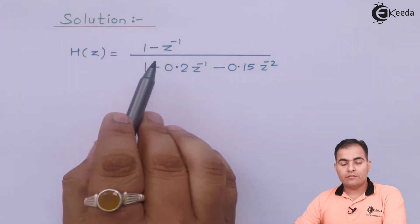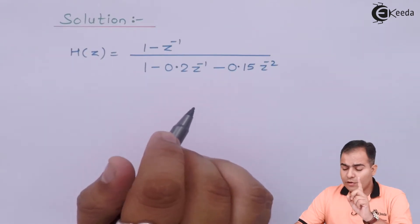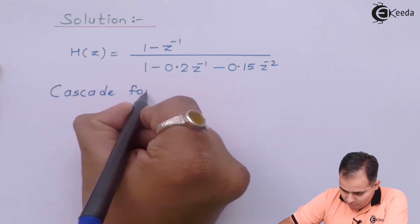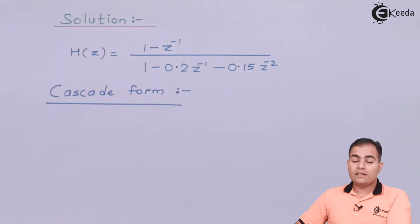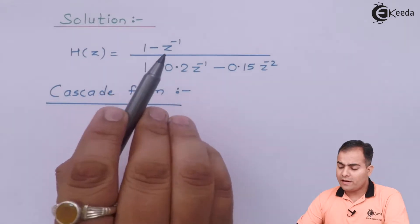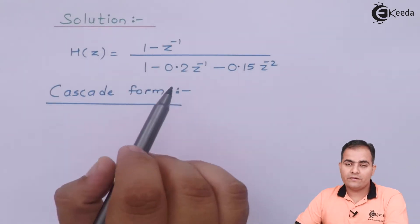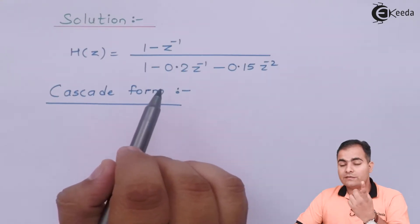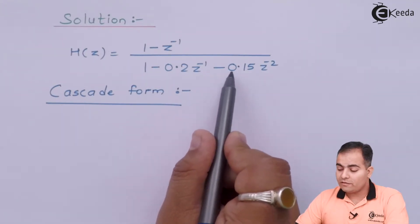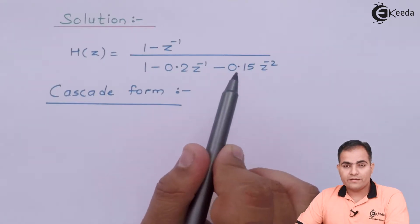H(z) is given as (1 - z⁻¹) in the numerator and (1 - 0.2z⁻¹ - 0.15z⁻²) in the denominator. First, we plot the cascade realization. We factorize the denominator. The two factors are -0.3 and 0.5, because the last term 0.15 is the product of 0.5 and 0.3, giving 5 × 3 = 15.